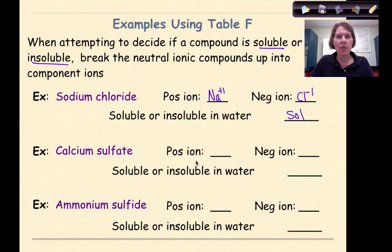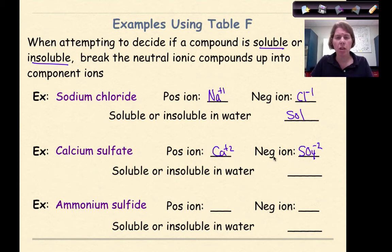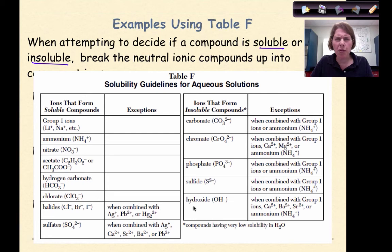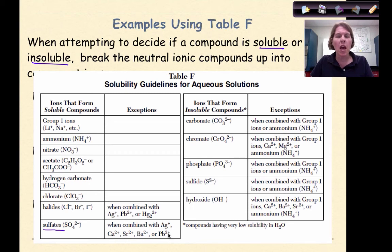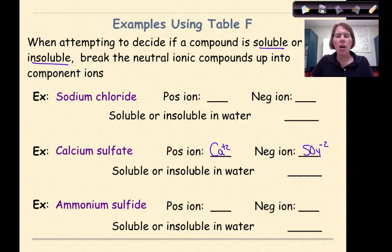Next, calcium sulfate: the positive ion is Ca²⁺ and sulfate is SO₄²⁻. Looking at Table F, sulfate is typically a soluble compound unless combined with Ag, Ca, Sr, Ba, or Pb — and calcium is one of those exceptions. Therefore, calcium sulfate is classified as insoluble.